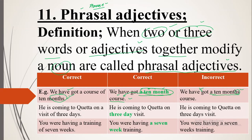The second example: 'He is coming to Quetta on a visit of three days' — that is correct. As a phrasal adjective: 'He is coming to Quetta on a three day visit.' Here, 'three day' is a group of two words adding something to the meaning of 'visit.' Keep in mind: 'three day visit' is correct — NOT 'three days visit.' Do not add 's' here.